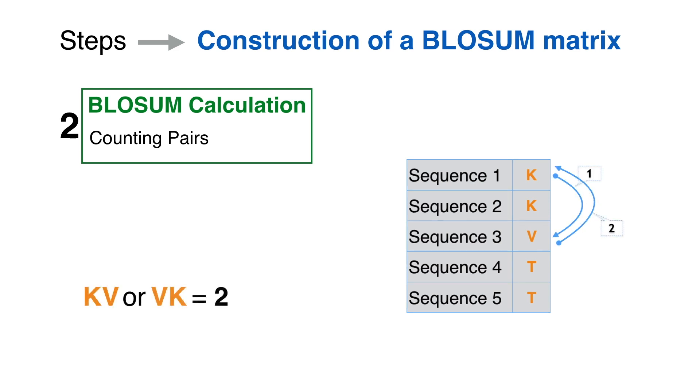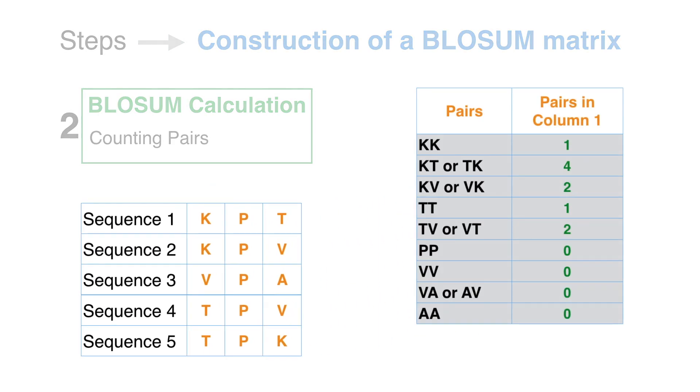Since there is no information on which character proceeds in the evolutionary events, each pair of different characters is counted twice. For example, since KT appears twice in the first column, the total of KT, or TK, count is 4. This table summarizes the count of pairs in the first column. Notice that pairs double P, double V, VA, or AV, and double A are not observed.